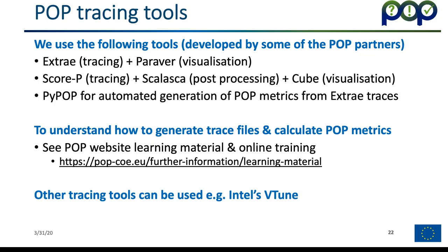Regarding which tracing tools are used in POP: we typically use the following tools, developed by some of the POP partners. We use X-Ray for tracing with Paraver for visualization, and we also use Scalasca for tracing with Score-P for post-processing and Cube for visualization. We also use a tool called PyPOP, which automatically generates POP metrics from X-Ray traces. If you want to understand how to use these tools, the best place to look is the POP website for learning material and further online training. You can use other tracing tools too — for example Intel's vTune — so if you have a favourite tracing tool you can probably extract the data you need fairly quickly using that.